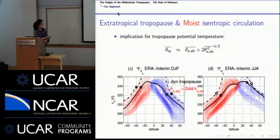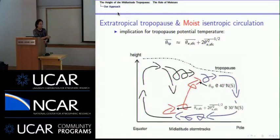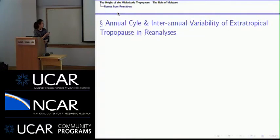To summarize the moisture-tropopause relationship: tropopause potential temperature is related to a large and rare fluctuation of near-surface θE, with some horizontal distance between the two. We next explore how this is represented in reanalysis data, in terms of both the annual cycle and interannual variability.